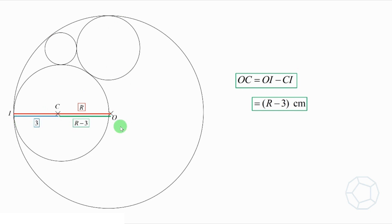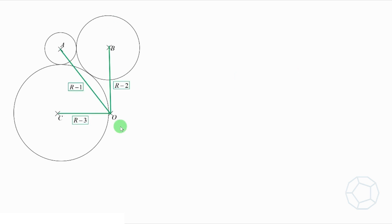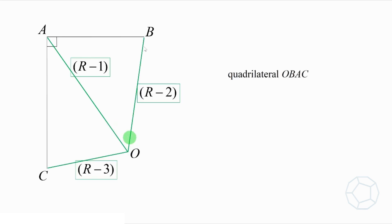So we have the lengths of OA, OB, and OC in terms of R. Now, let's look at the quadrilateral OBAC. Remember that in the introduction of the video, AB is equal to 3cm, and AC is equal to 4cm. How to solve for the radius R?